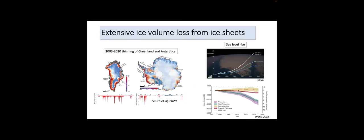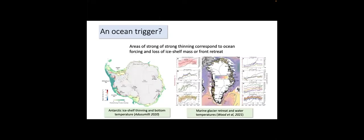I think it's good to give context even though everyone here knows this already. We care about ice-sheet ocean interactions because there's been extensive ice volume loss from the Greenland and Antarctic ice sheets over the past several decades, focused along the margin of the ice sheets and in certain catchments. This has led to rates of sea level rise that are currently increasing, and there is an ocean trigger to this ice loss.